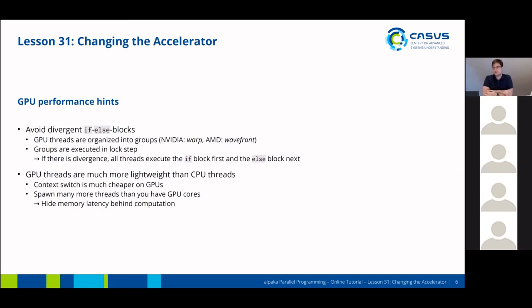There are some performance hints to consider when using GPUs. You should avoid divergent if-else blocks. On the hardware level, GPU threads are organized into distinct groups called warps on NVIDIA GPUs and wavefronts on AMD GPUs. These groups are executed in lockstep, meaning that if there is divergence, all threads will execute the if-block first and then the else-block — they are just masked out but still execute. So if you have a very short if-block and a very long else-block, the if-block will have considerably worse performance.